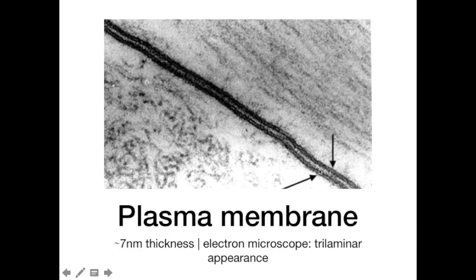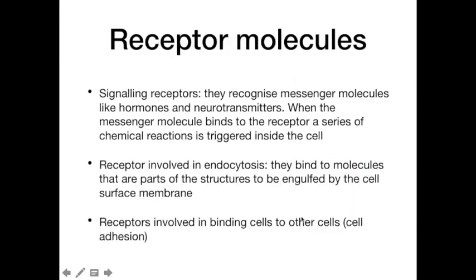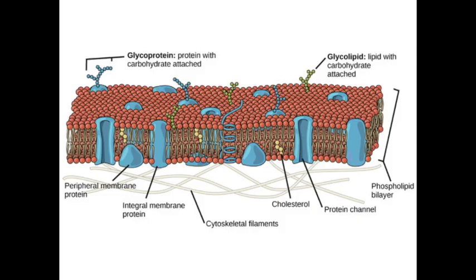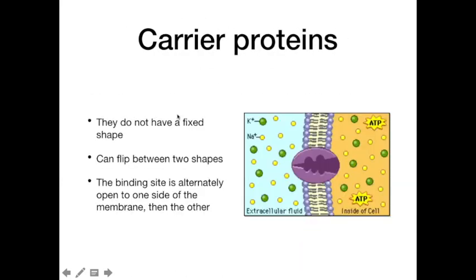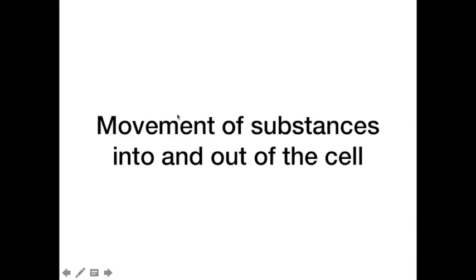In the electron microscope, the plasma membrane has a trilaminar appearance — meaning three layers are visible: the two outer electron-dense layers representing the phospholipid heads and proteins, and the inner electron-lucent layer representing the hydrophobic tails.